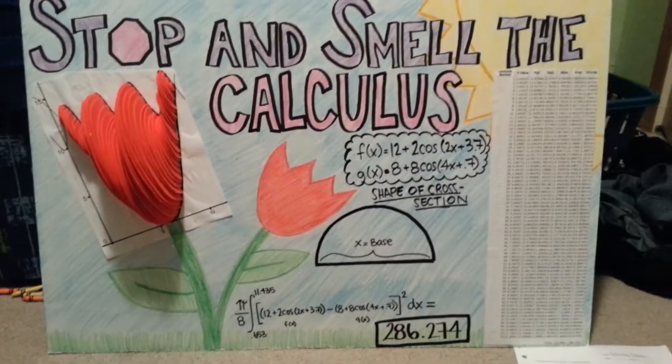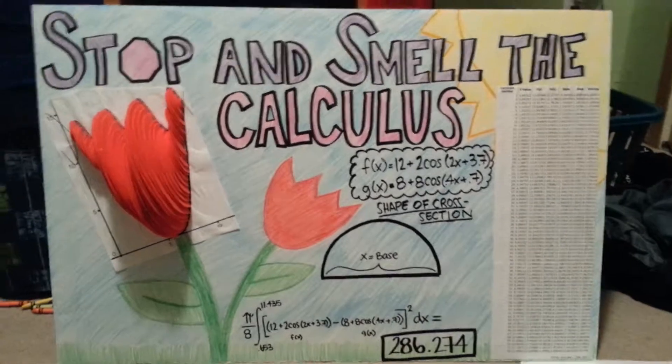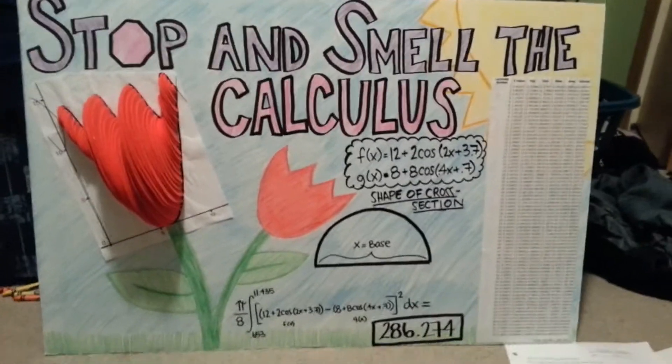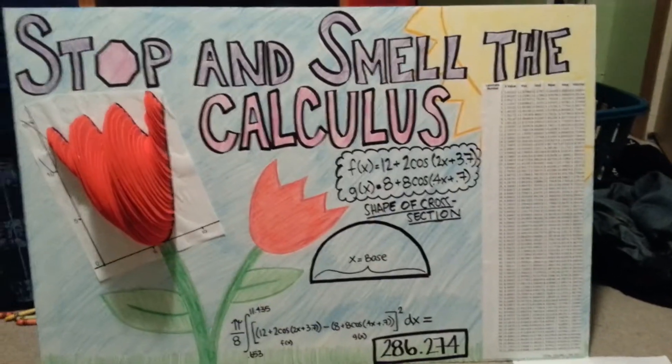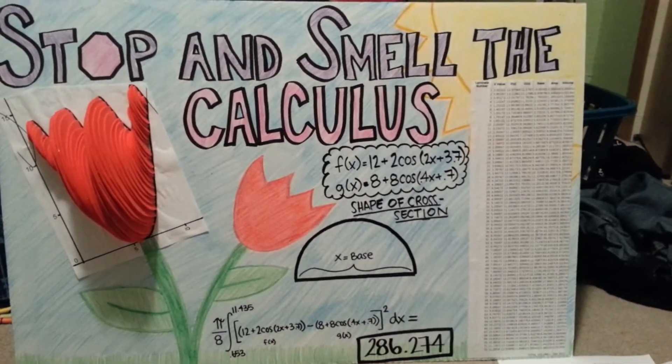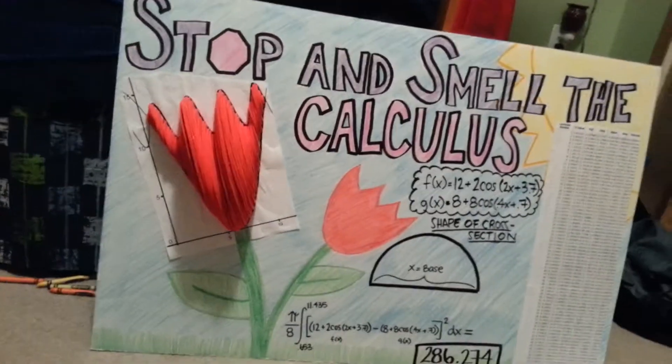Hi, my name is Cassidy Evans, and I'm going to explain my volume of cross-section project. The title of my project is Stop and Smell the Calculus, and I chose to use a shape that looked like a tulip.